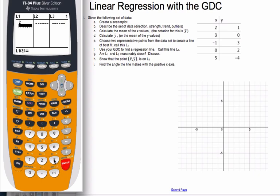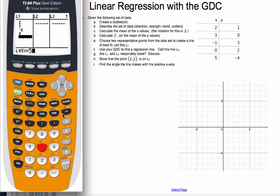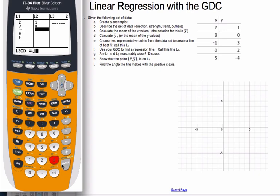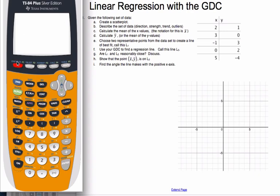Now I'll enter my X values into L1: 2, 3, negative 1, 0, 5. Then going over to L2 I'll enter: 1, 0, 3, 2, negative 4.